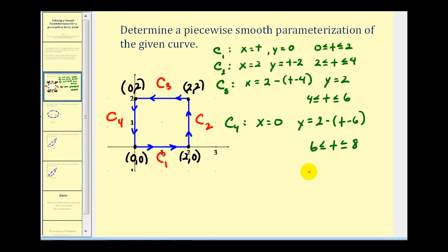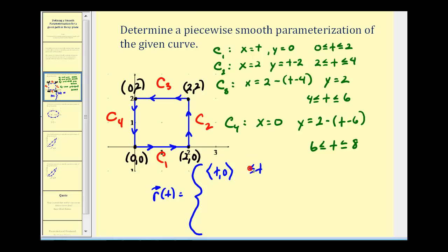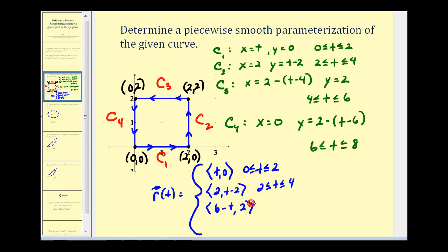Now we'll write this curve as a vector-valued function using these parameterizations. We'll have four pieces: the first piece is (t, 0) for t on [0, 2]; then (2, t minus 2) from two to four; then (6 minus t, 2) from four to six, since two minus (t minus four) simplifies to six minus t; and for the fourth curve, (0, 8 minus t) for t from six to eight, since two minus (t minus six) simplifies to eight minus t.